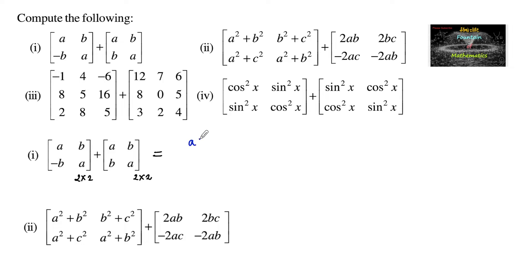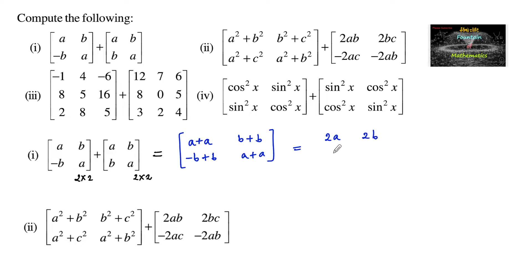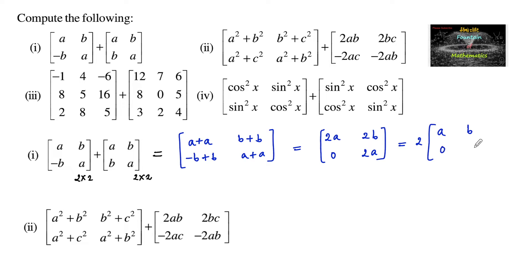So we can add A plus A, B plus B, negative B plus B, and A plus A, which is equal to 2A, 2B, 0, and 2A. We can also take 2 as a common factor: 2 times [A, B, 0, A].